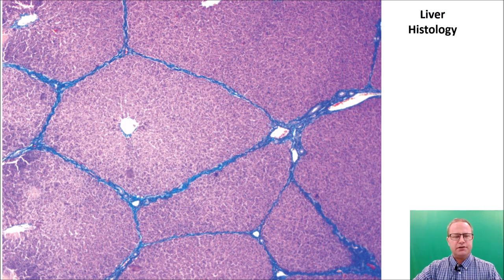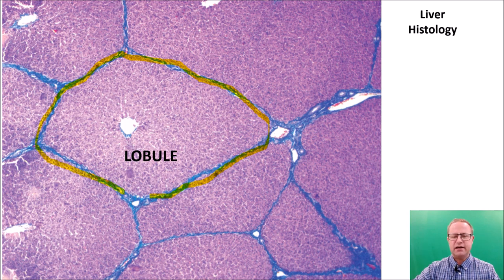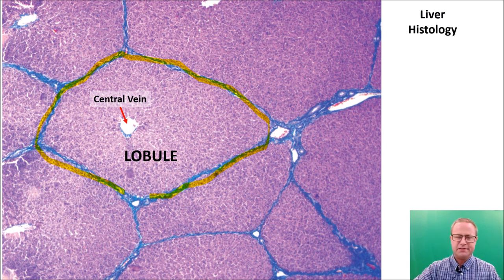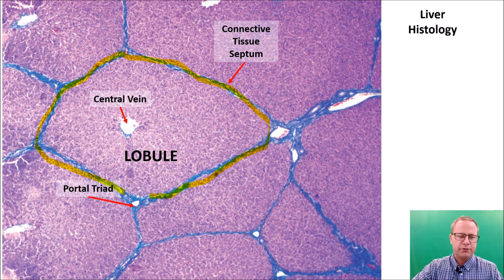Let's look at liver histology. The first thing you should notice is that the liver is divided into hexagonal lobules — a very unusual type of histology. With a special stain, you can see this collagenous septa dividing the liver into hexagonal lobules. Each lobule has a central vein, which is important for the physiology of the liver lobule. On the outside, each corner has a portal triad consisting of the hepatic portal vein, a bile duct, and a hepatic artery.